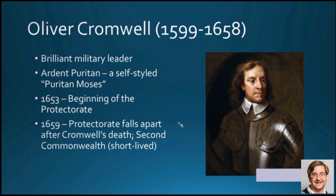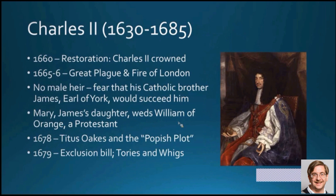Cromwell saw himself as a new Moses — a Puritan Moses — but his son was not able to hold things together. In the span of a brief year from 1658 to 1659, the Second Commonwealth fell apart. In 1660, Charles II, son of Charles I, was brought back. The people who had been involved in his father's execution were themselves executed — that was a condition of his return — marking a period of restoration of the monarchy in England.